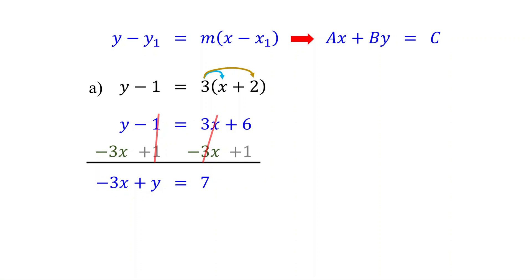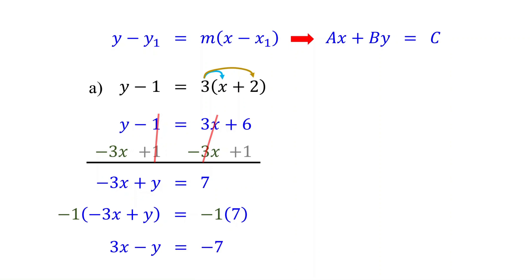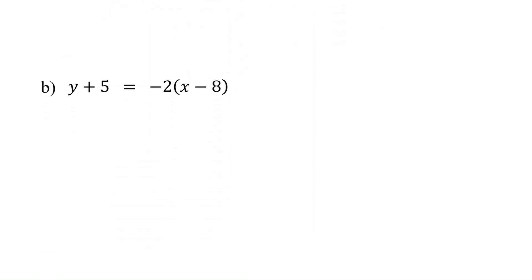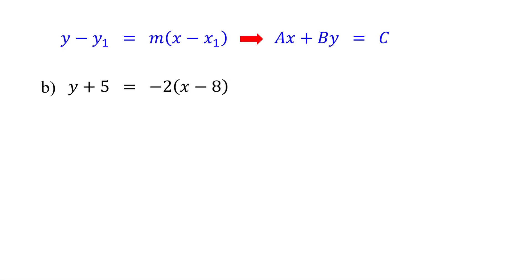To make it positive, multiply both sides of the equation by negative 1. Multiplying by negative 1 simply changes the sign of each term. That's it — this is the equation in standard form. Now let's move on to the second example with a negative slope. Feel free to pause the video and give it a try.